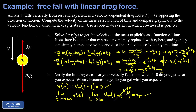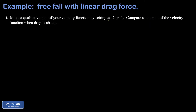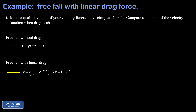Finally, in part i, we make a qualitative plot by setting all constants m, k, and g equal to one. For free fall without drag, the velocity is just gt, which simplifies to v equals t — a straight line. For free fall with drag, the velocity is v_t times one minus e to the negative kt over m, which with all constants equal to one becomes v equals one minus e to the negative t. The free fall without drag is plotted in red and free fall with drag in yellow.